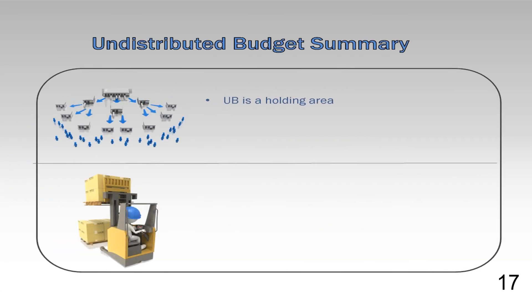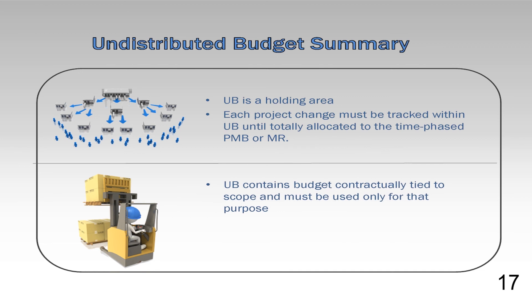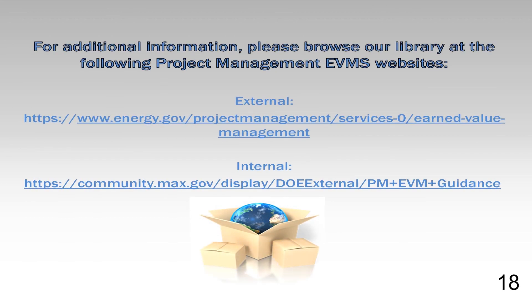In summary, UB is a holding area until such time as the scope and budget is either distributed to control accounts or summary-level planning packages, or until contractually deleted or removed to the correct control account. Each project change must be tracked within UB until totally allocated to the time-phased PMB or MR. UB contains budget contractually tied to scope, and consequently must only be used for that particular scope. Lastly, logs must be maintained to identify all credits and debits throughout the project to the contract budget base or project budget base. For additional information relative to EVMS procedures, templates, helpful references, more snippets, and training materials, please refer to DOEPM's external EVM homepage or the internal max.gov PM library.